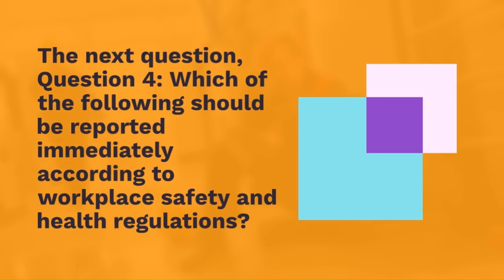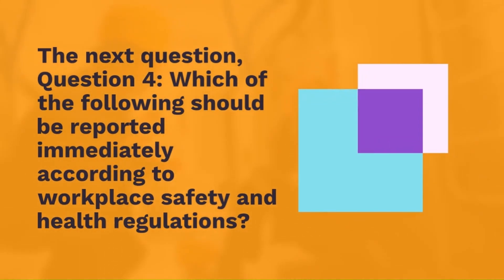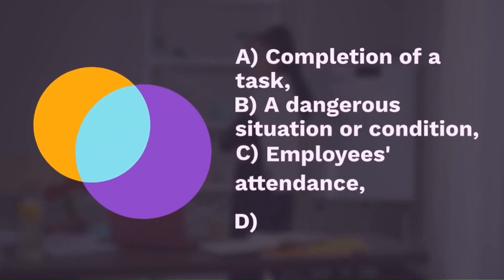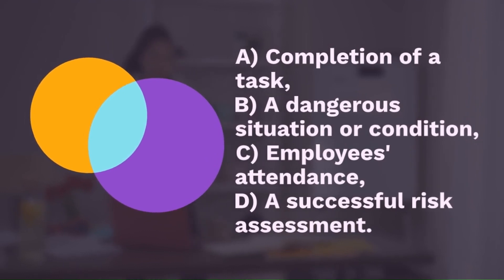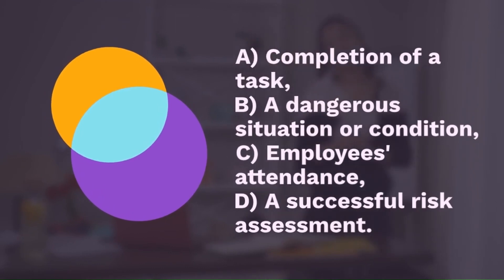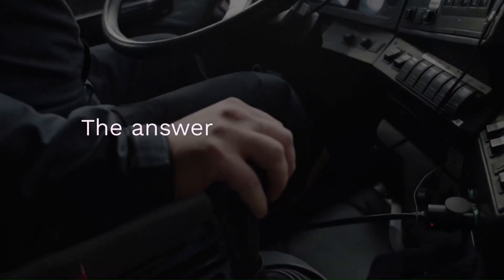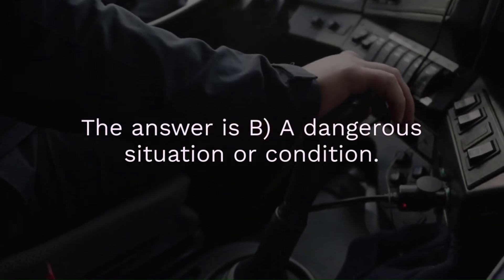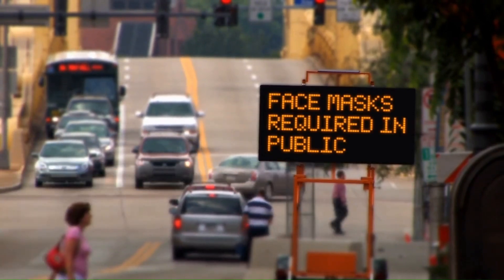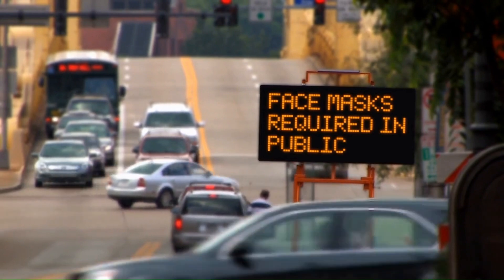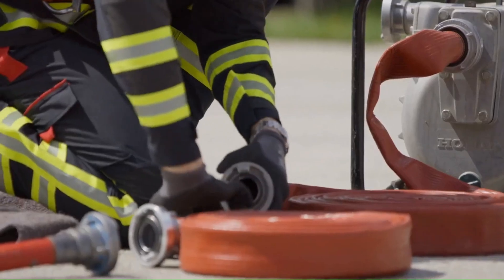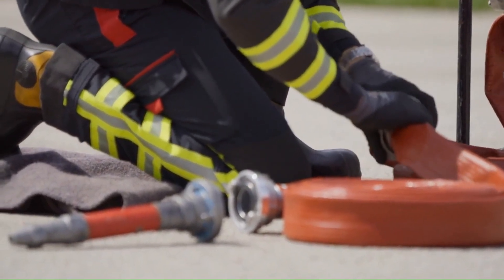Question 4: Which of the following should be reported immediately according to WSH regulations? A — completion of a task, B — a dangerous situation or condition, C — employee attendance, or D — a successful risk assessment. The answer is a dangerous situation or condition. Reporting a dangerous situation right away is crucial because it can stop an accident before it happens — just like warning someone about a pothole on the road. Reporting hazards quickly can prevent serious accidents and save lives.